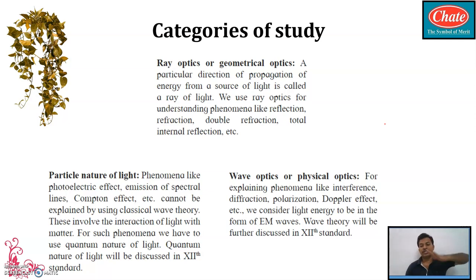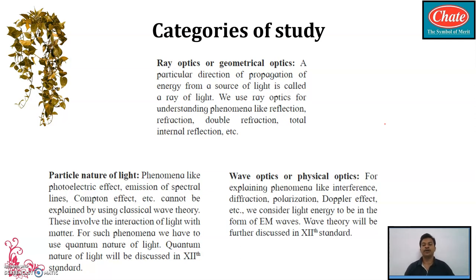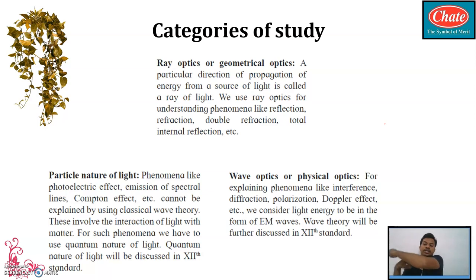We use ray optics for studying phenomena such as reflection, refraction, and total internal reflection. If you study all these concepts, you are studying ray optics. The second branch is wave optics, also called physical optics. For explaining phenomena like interference, diffraction, polarization, and the Doppler effect, we must consider light energy to be in the form of electromagnetic waves.